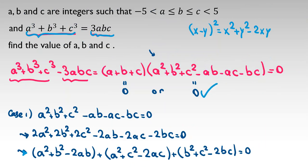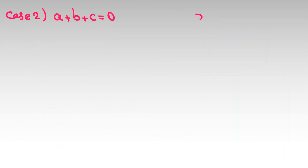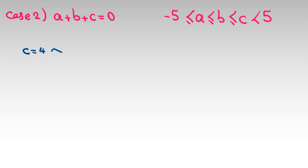Now it's time to check Case 2: a plus b plus c equals 0, with negative 5 less than a less than or equal to b less than or equal to c less than 5. If c equals 4, then a plus b equals negative 4. With a equals negative 4, b equals 0; with a equals negative 3, b equals negative 1; with a equals negative 2, b equals negative 2. So we have three cases here.